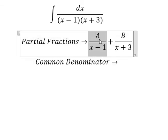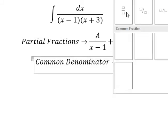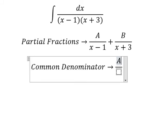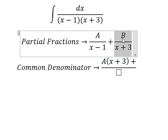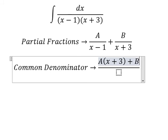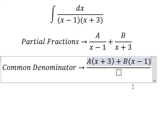This one is missing x plus 3, so capital A multiplies by x plus 3. This one is missing x minus 1, so capital B multiplies by x minus 1.